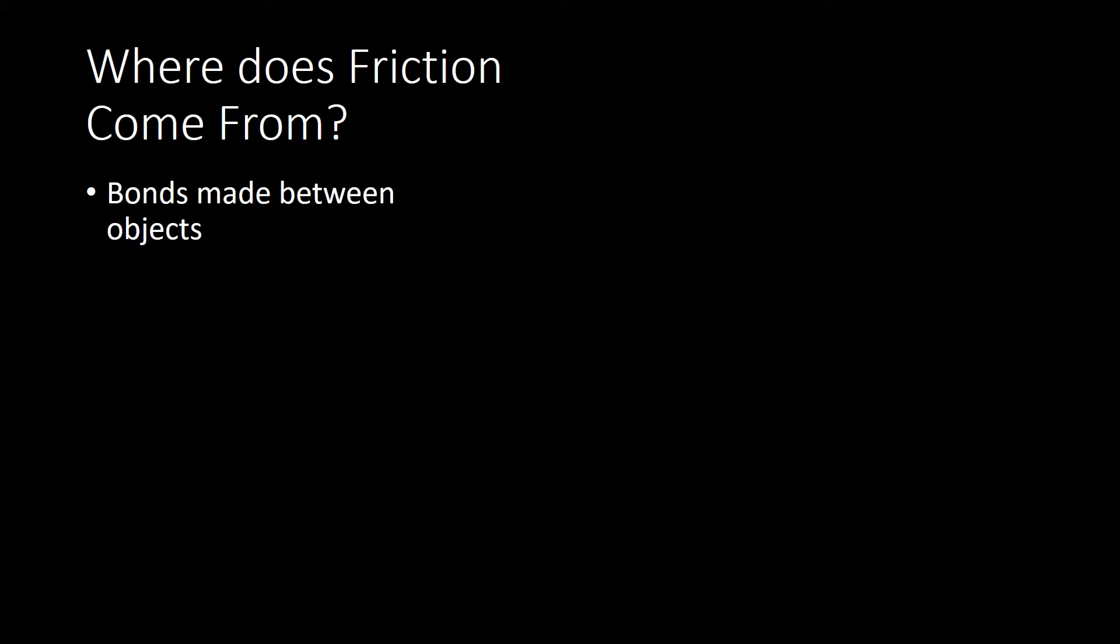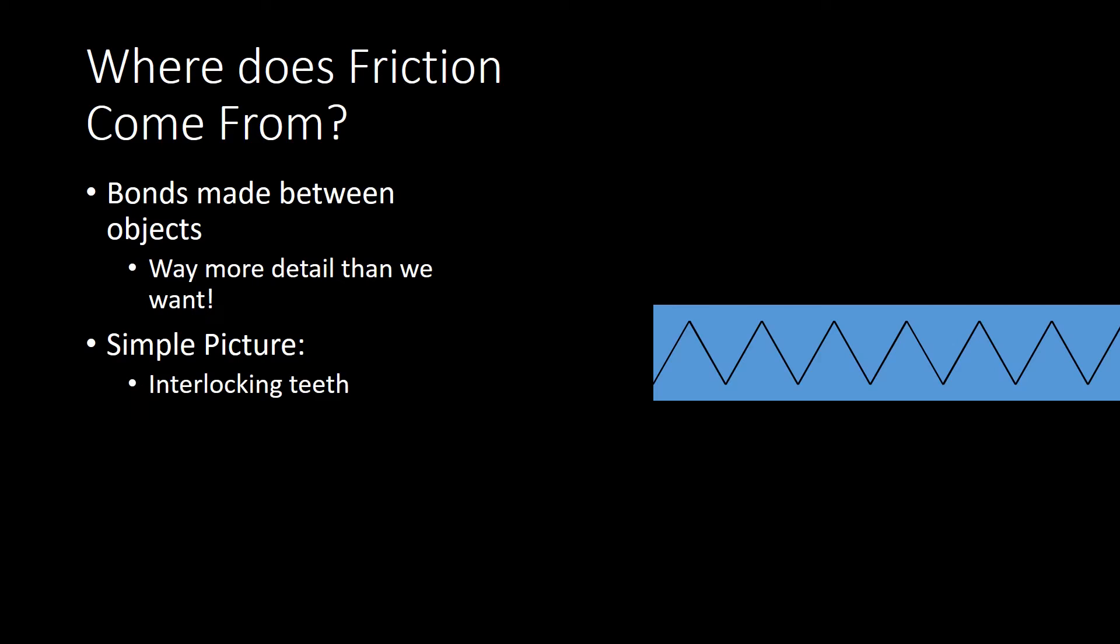But that is way more detail than we want to go into. So instead, we're going to have a fairly simplistic picture where we think about still the microscopic nature of the surface, but only to the extent that we realize that no surface is ever truly smooth. It's always got some jaggedness to it, and we're just going to model that jaggedness in a very simplistic way as essentially interlocking teeth.